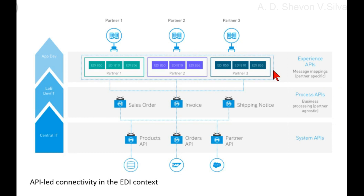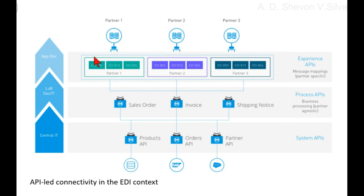This approach can be taken one step further. The retailer could apply the API-led connectivity approach to the Experience API layer as well. In this scenario, trading partners can submit purchase orders via a partner API and create the required EDI 850 message to process the purchase order document. This way, partners could be onboarded more quickly by eliminating the need for EDI expertise — for franchises that may not have an EDI gateway, or for new retail channels like kiosks that do not speak EDI.